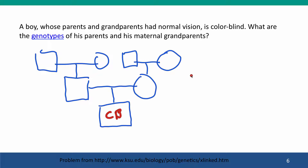What are the genotypes of his parents and his maternal grandparents? We can track this by following the chromosomes back. The boy has an X chromosome and a Y chromosome. He got his Y from his father, and his X chromosome from his mother. This X chromosome carries a colorblind allele — because he's hemizygous, he only has one X, so he's colorblind. This means his mother had two X chromosomes, one of which must have had the colorblindness allele.